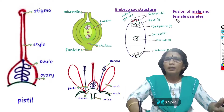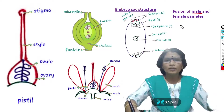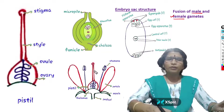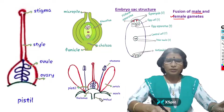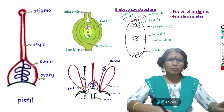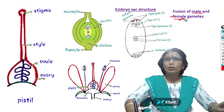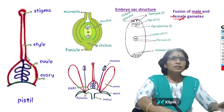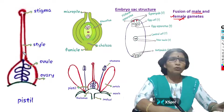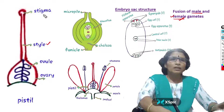Where are the male and female gametes located in an angiosperm flowering plant? First, I will tell you about the female gametes. This is the general structure of an angiosperm flower. The flower has a stalk-like structure called the pedicel. On the pedicel, the thalamus is present. On the thalamus, four floral parts are arranged: sepals, petals, stamen, and pistil. Stamen is the male sex organ and pistil is the female sex organ.